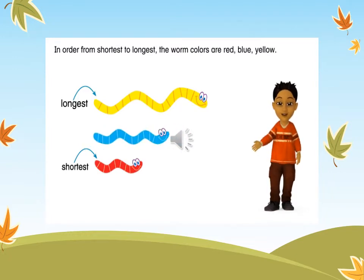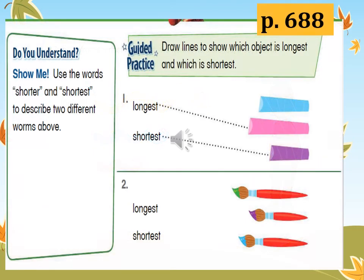Now you know how to put objects in order from shortest to longest. Let's watch another video to understand the lesson further. Open your book to page 688. Let's do the guided practice. Draw lines to show which object is longest and which is shortest. For number one, the longest is the pink one and the shortest is the purple one.